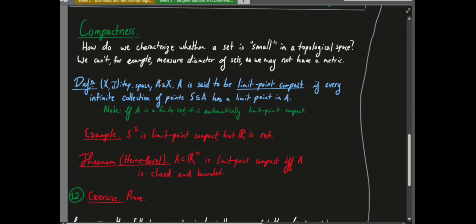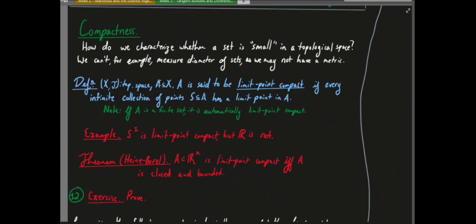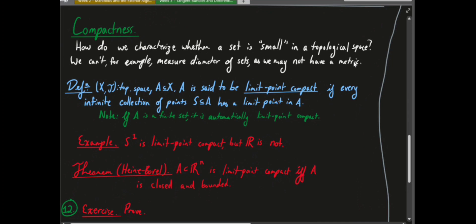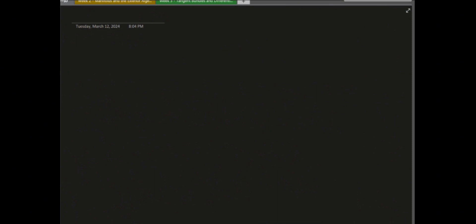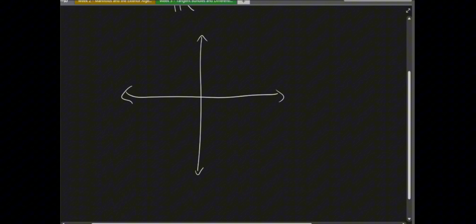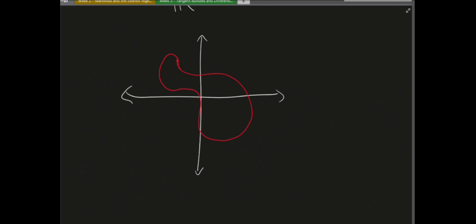Compactness: in topology you don't always have a metric to measure distances or diameter. Historically, the idea came from closed bounded sets in Rn. A closed bounded set in R2 can be characterized by the following property: if you put infinitely many points inside it, those points will always have some limit point — they'll cluster up somewhere. You can't space them out at non-negligible distances forever in a limited-size closed bounded space.